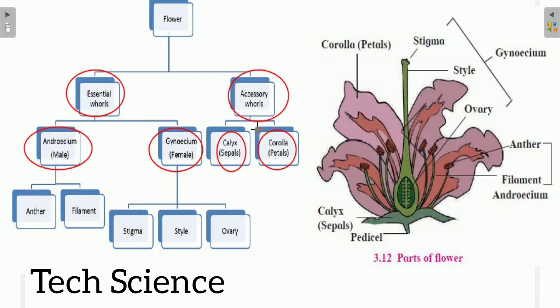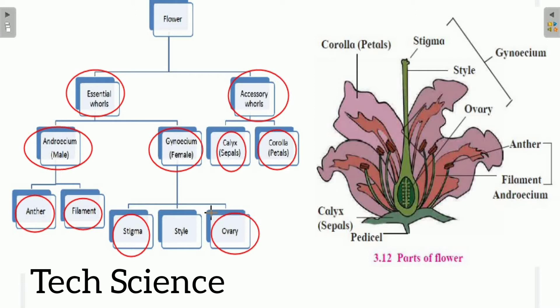The androecium is divided into two parts: the part that contains pollen grains is called the anther, and the supporting structure is called the filament. The pollen grains land on the stigma, which becomes sticky during the pollination process. The actual fertilization happens in the ovary. Connecting the stigma to the ovary is a tube-like structure called the style. So stigma, style, and ovary are the three parts of the gynoecium.